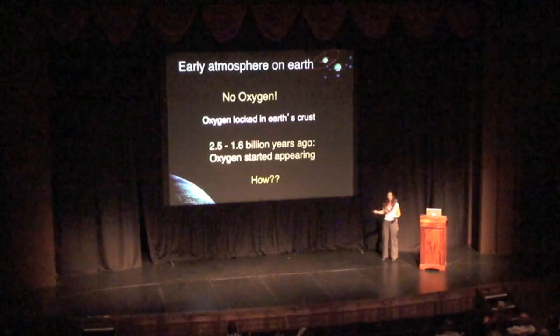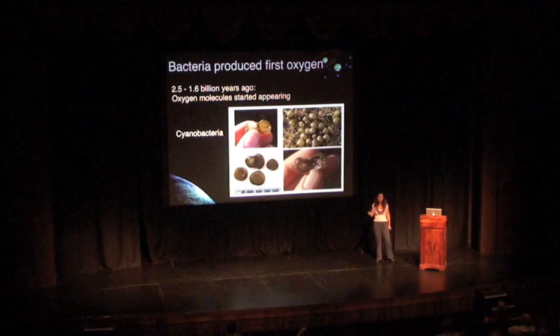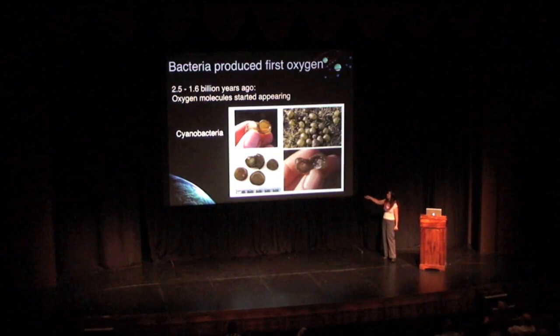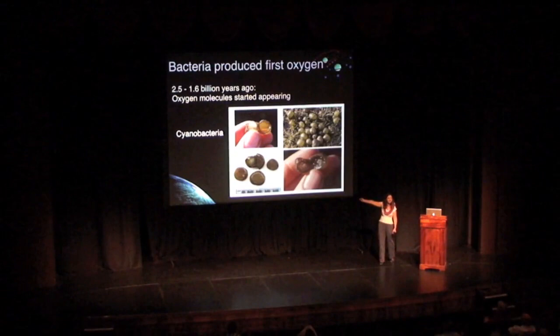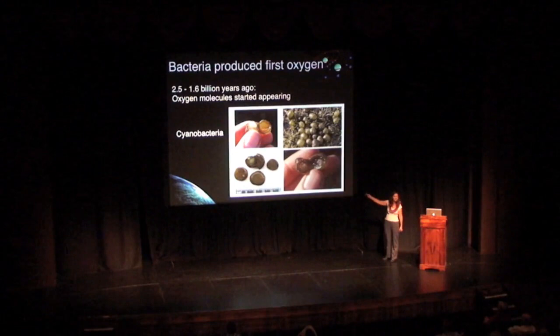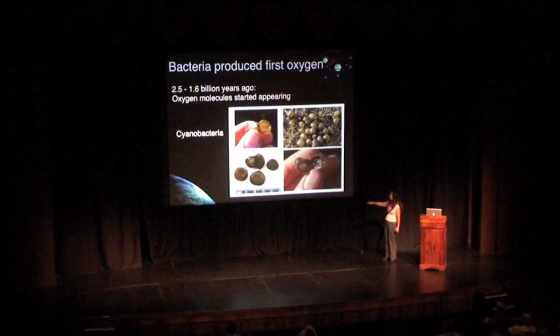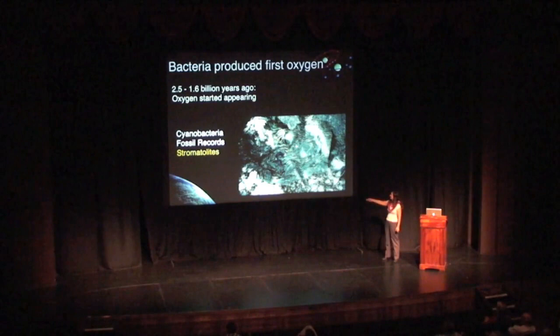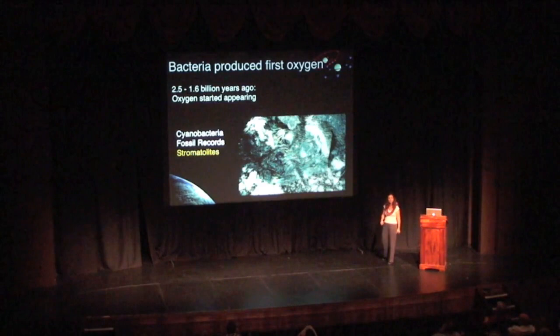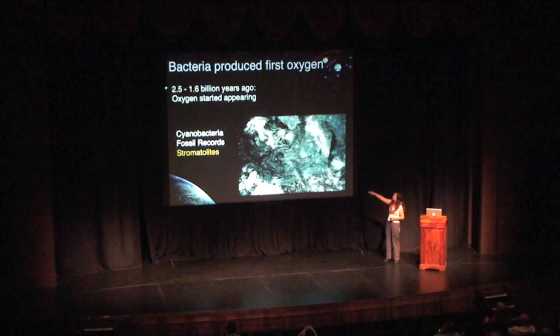Oxygen was sitting inside the Earth locked in the Earth's crust in the early days — it wasn't actually in an atmosphere, and Earth didn't have an atmosphere right at the very beginning. So why did oxygen start appearing in Earth's atmosphere? About 2.5 to 1.6 billion years ago, oxygen molecules started appearing, and what we think was creating them are tiny organisms called cyanobacteria — you can still find these in the ocean. We know this from fossil records in old rocks called stromatolites, which contain fossil traces of these cyanobacteria and oxygen.